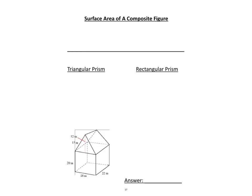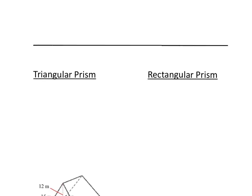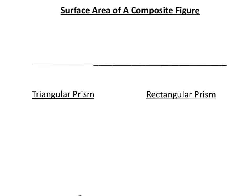The last thing we're going to do for surface area is surface area of a composite figure. Surface area of a composite figure takes everything that we've done into consideration. We are dealing with the sum of all faces on the outside. On every surface area page, you should have written 'outside' because the goal is for you to realize surface area is always on the outside.